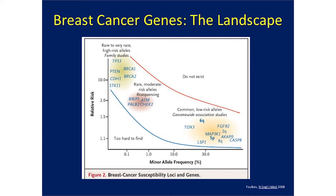This slide gives a sense of the landscape of what we know about breast cancer genetics. On the vertical axis, relative risk shows how many times higher your risk is than average if you inherit one of these mutations. With a BRCA1 or BRCA2 mutation, your risk might be up to tenfold higher than average. On the horizontal axis, minor allele frequency shows how common the mutation is in the population. BRCA1, BRCA2, and these other gene mutations are quite rare — maybe 1 in 400 people, or even rarer.